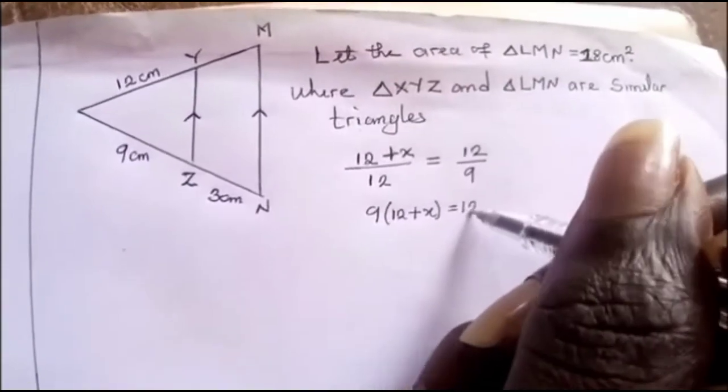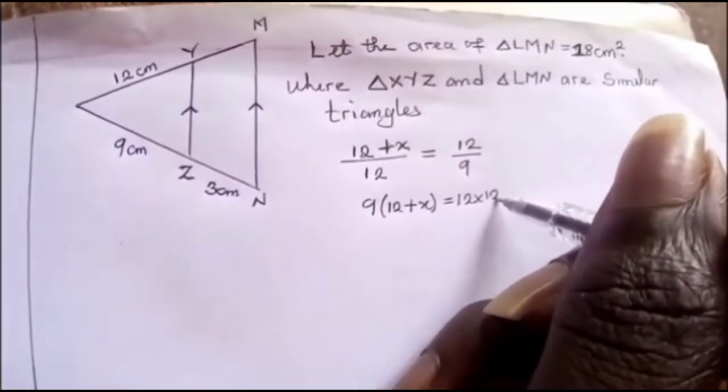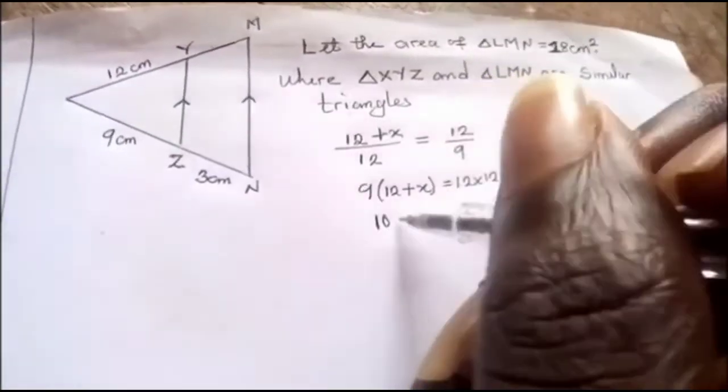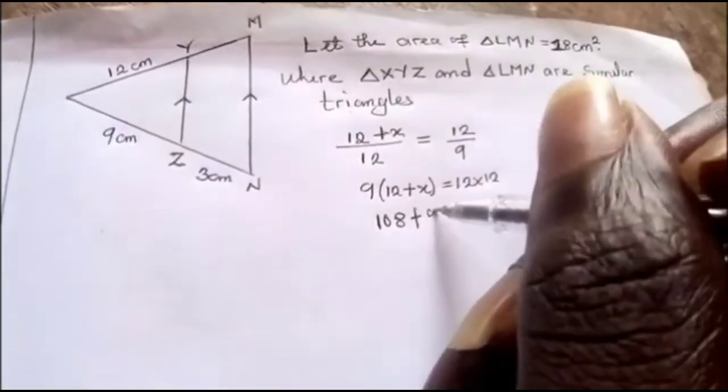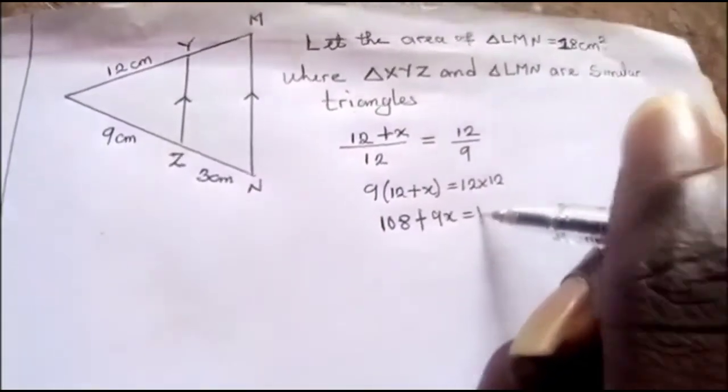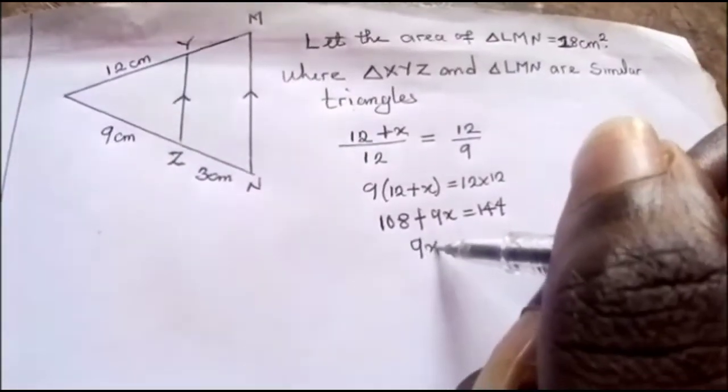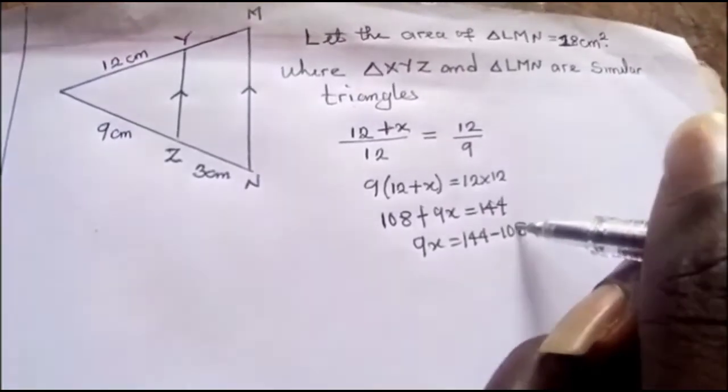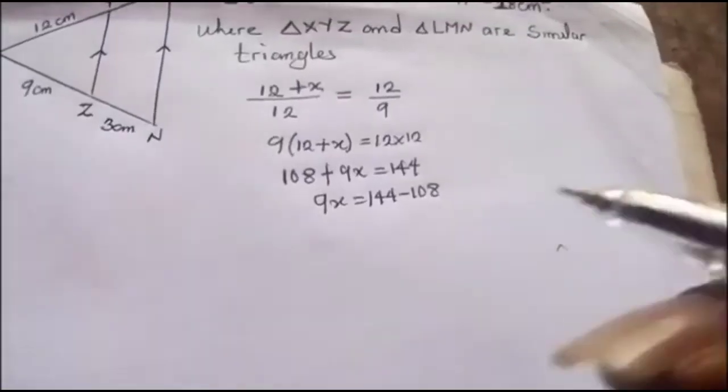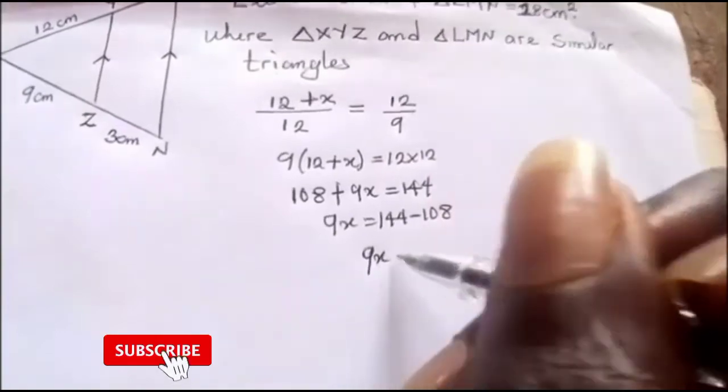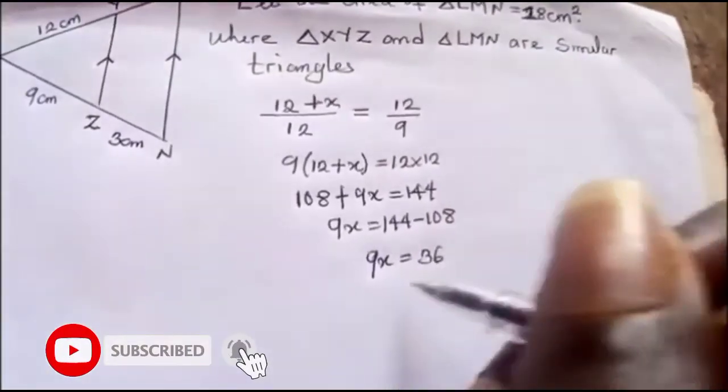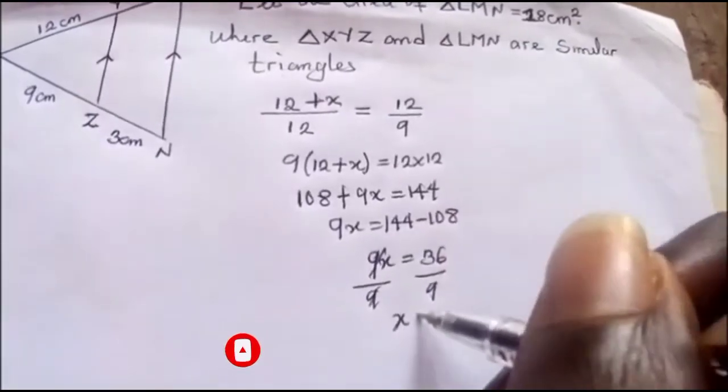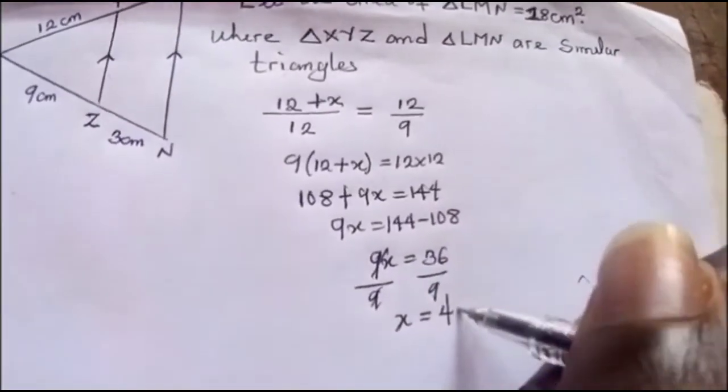9 times x will give us 108 plus 9x equals 144. So we have 9x equals 144 minus 108. So we have 9x equals 36. We have x equals 36 over 9, so that gives us 4 centimeters.